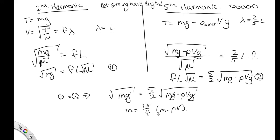We're trying to find the volume. We know everything else, so let's rearrange this. This is 4 over 25m minus m is equal to minus rho v.